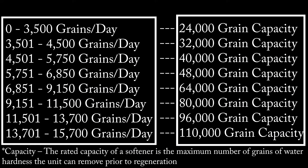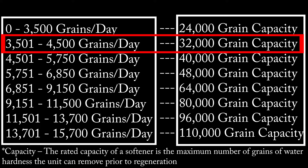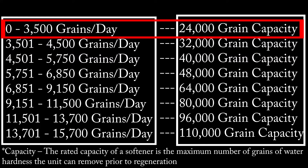Then you have to look at this chart to find out the right softener capacity. Most four-person homes use a 32,000 grain unit. I calculated 3,000 grains to be removed, therefore I need a 24,000 grain capacity water softener. The rated capacity of a softener is the maximum number of grains of water hardness the unit can remove prior to regeneration.